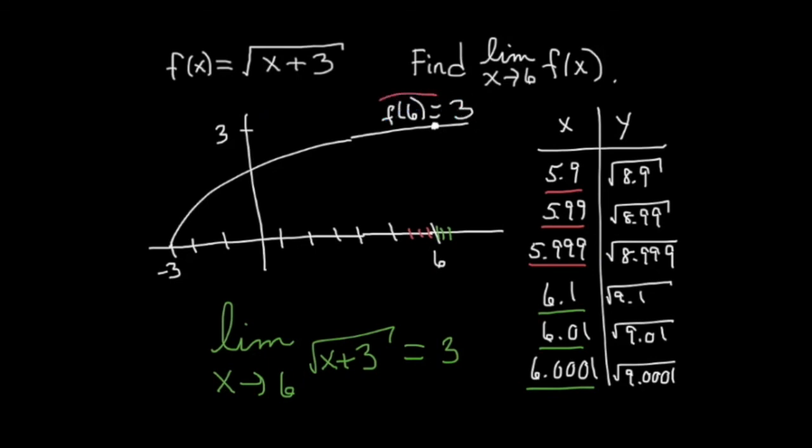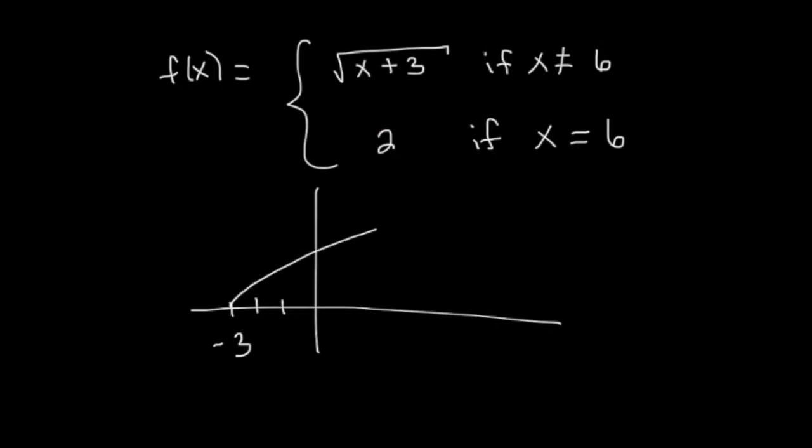Again, this information is irrelevant. Here's a function that looks almost the same, except it's piecewise. At x equals 6, the square root function is not applicable. So there's a hole in the square root part and the actual height of the function is 2, given by this piecewise definition. But nonetheless, all of our computations on the previous slide actually still apply. As long as you're not equal to 6, the square root is applicable. So here we still have the fact that the limit as x approaches 6 of this function is indeed still 3.